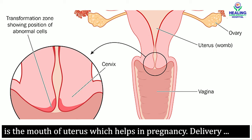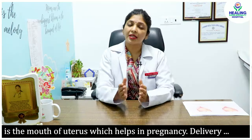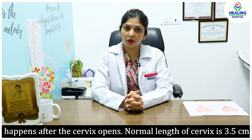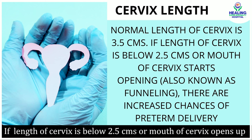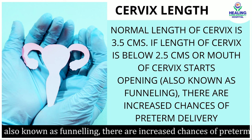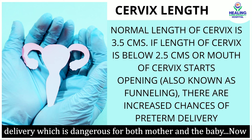Cervix uterus ke mouth ko bolte hai, jo ki pregnancy ko tikka rehne mein help kareta hai. Cervix ke open hone pe hi delivery hoti hai. Is cervix ki normal length around 3.5 cm hoti hai. Agar ye time se pehle chhota ho jaye — that is agar is ki length 2.5 cm se kam ho jaye — ya phir cervix ka mouth open hona shuru ho jaye.